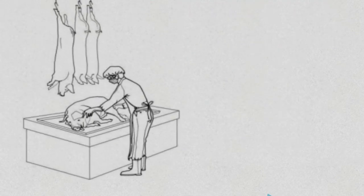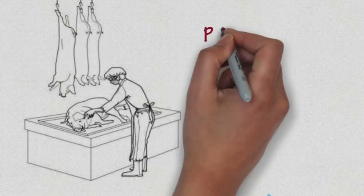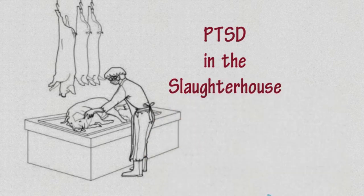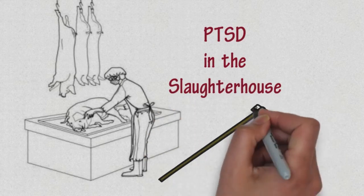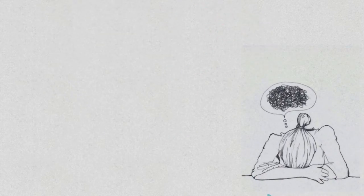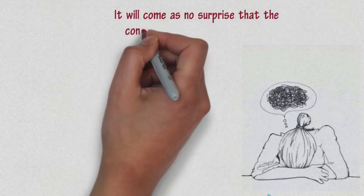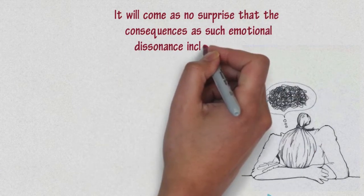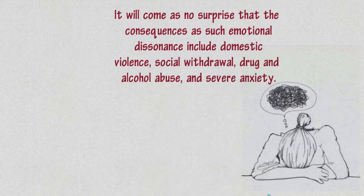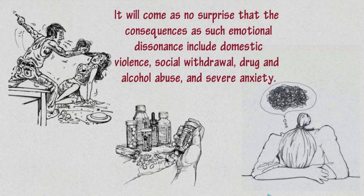My last point is to look at the effects that the industry has on its workers. In an article titled PTSD in the Slaughterhouse, it looks at the social impact of those who kill sentient beings on a daily basis. It goes on to say, it will come as no surprise that the consequences of such emotional dissonance include domestic violence, social withdrawal, drug and alcohol abuse and severe anxiety.